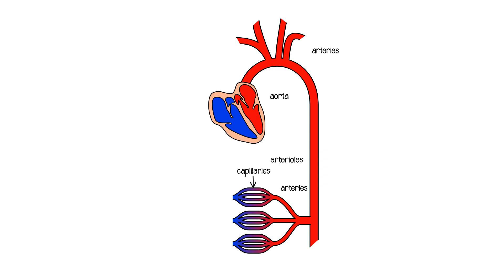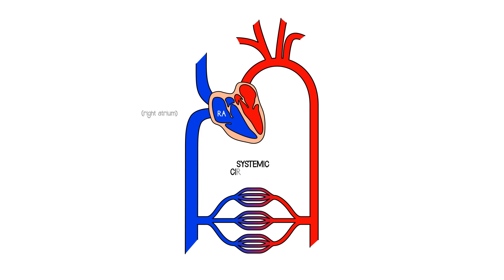Then the blood from the capillaries will be collected up into venules, veins, and ultimately it will go back to the heart. If we're talking about the return of the blood from the systemic circulation to the heart, it's going back into the right atrium. So I'll define the chamber here as the right atrium. So here's our systemic circulation.